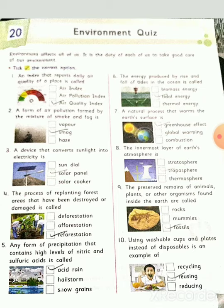Tick the correct options. First: an index that reports daily air quality of a place is called the Air Quality Index. Second: a form of air pollution formed by the mixture of smoke and fog is called smog. Third: a device that converts sunlight into electricity is a solar panel. Fourth: the process of replanting forest areas that have been destroyed or damaged is called reforestation.